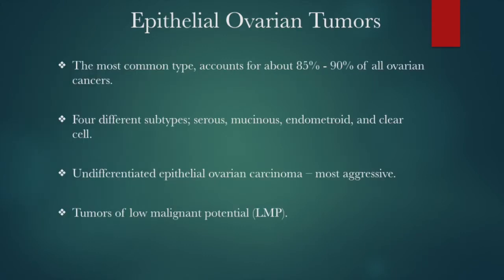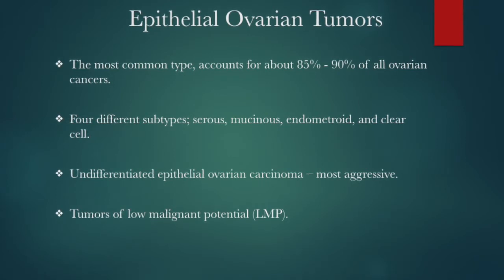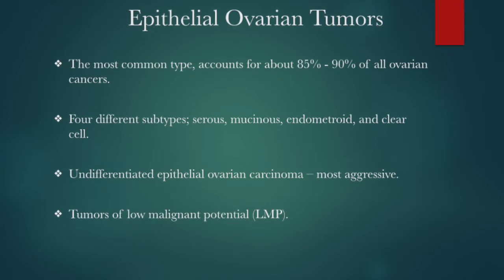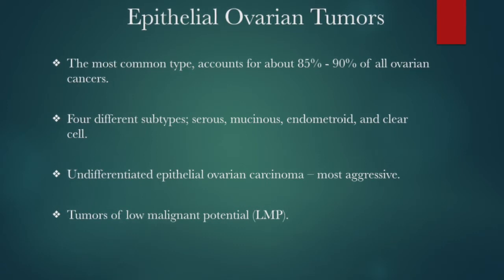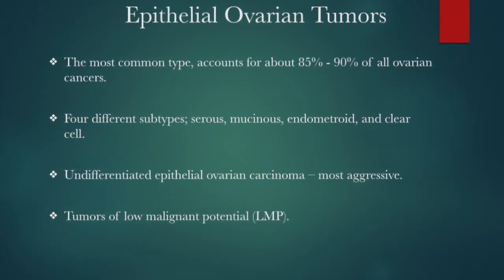Malignant epithelial ovarian tumors are cancerous and are called carcinomas. This type accounts for about 85 to 90% of all ovarian cancers. When viewed microscopically, these tumor cells have many features used to classify them into four subtypes: serous, mucinous, endometroid, and clear cell. If the cells do not look like any of the four subtypes, then it is classified as undifferentiated epithelial ovarian carcinoma, which grows and spreads more aggressively than the others.